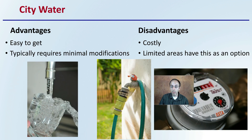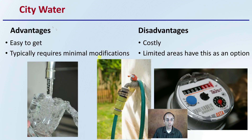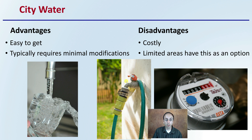Next is city water, also called tap water. The advantage is that it's easy to get and typically requires minimum modifications — you can literally just hook a hose up and go irrigate. However, one disadvantage is that it can be costly compared to other sources, and limited areas have this as an option, particularly if you're in distant areas where they may not supply enough water or at least justify the cost for the volume of water you may need.